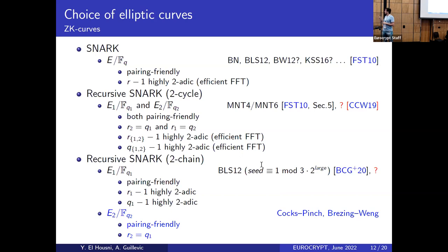In our recursive two-chain approach, we construct elliptic curves sequentially. The inner curve must be pairing-friendly with r-1 highly 2-adic, but also q-1 must be highly 2-adic, since that base field characteristic becomes the subgroup order of the next curve. The outer curve must then be pairing-friendly with a subgroup order precisely equal to the base field of the inner curve.